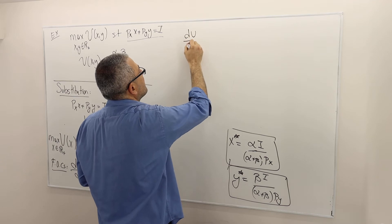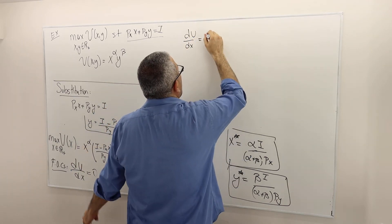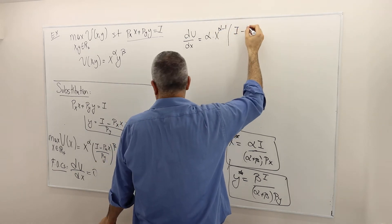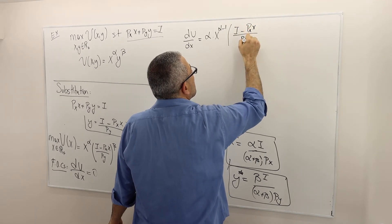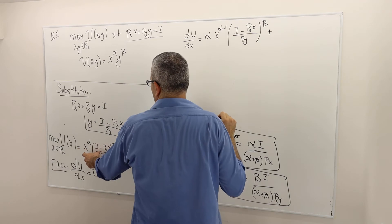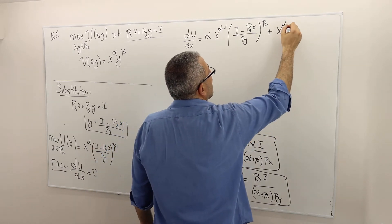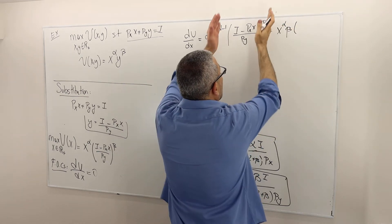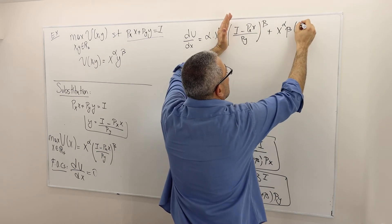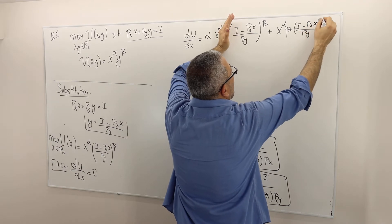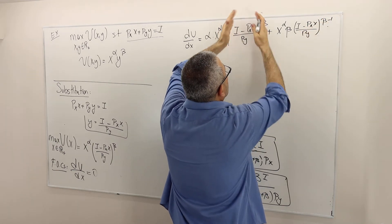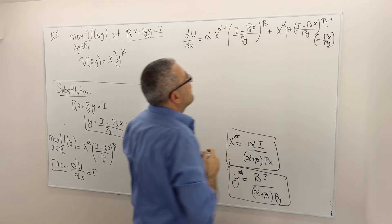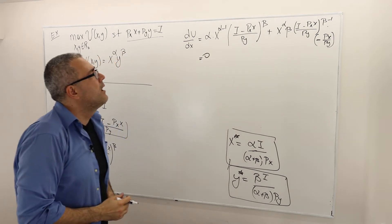All right, so du dx is equal to, well, the derivative of the first term, alpha times X to the power alpha minus 1, multiplied by the second term, right? I minus PXX divided by PY to the power of beta, plus the derivative of the second term times X alpha. So X alpha times the derivative of the second term, which is beta, and then I'm going to apply the chain rule. So beta times I minus PXX divided by PY to the power of beta minus 1, times the derivative of inside, which is minus PX over PY. So all of those are multiplied. And this has to be equal to 0.